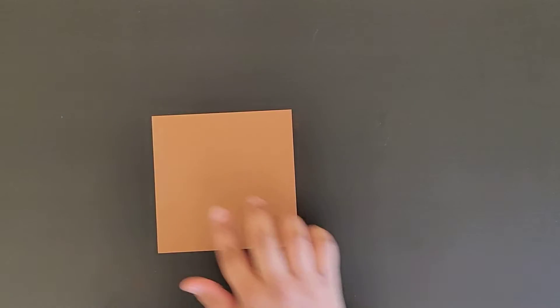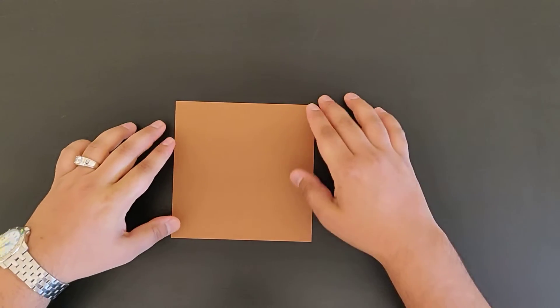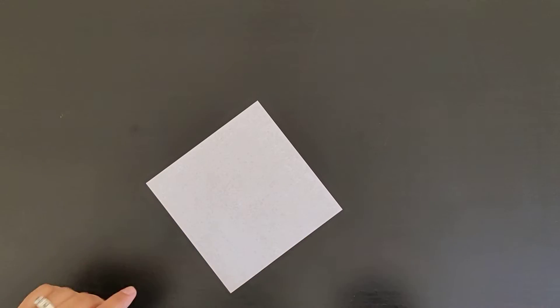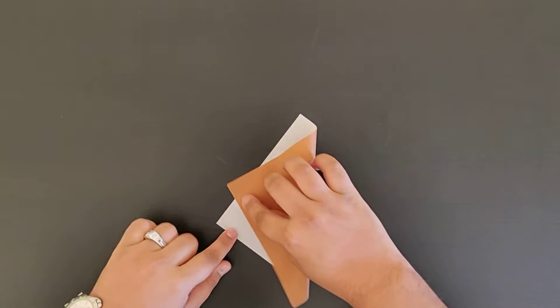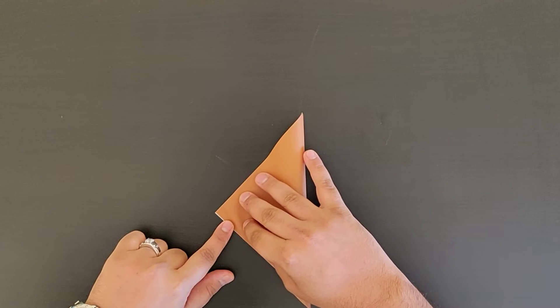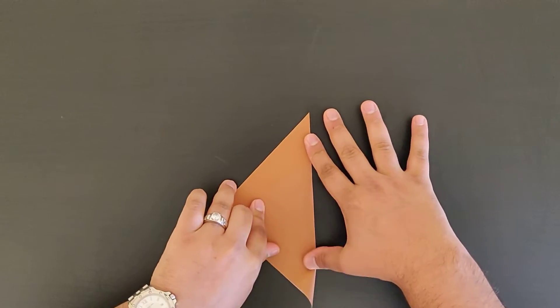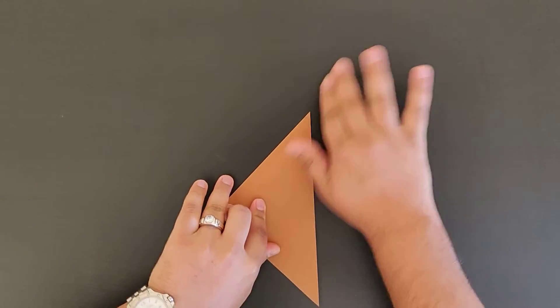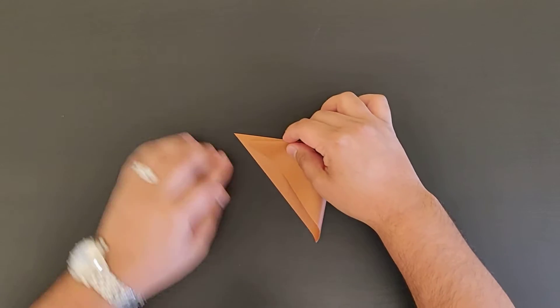To start with we will need ourselves an origami paper square. To get us going, what we're going to do is fold this corner to corner, flatten it out, and then we're just going to fold this in half again corner to corner.